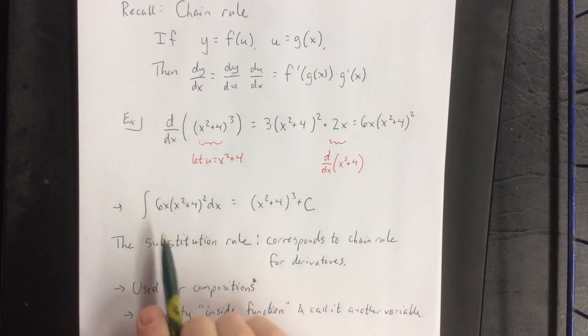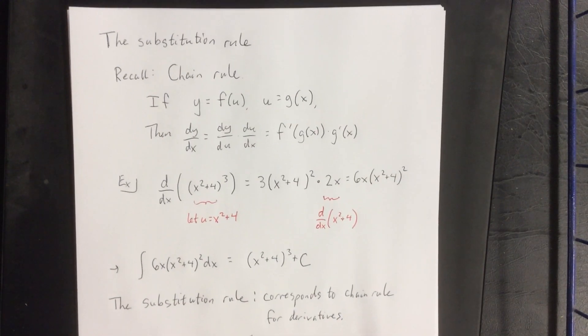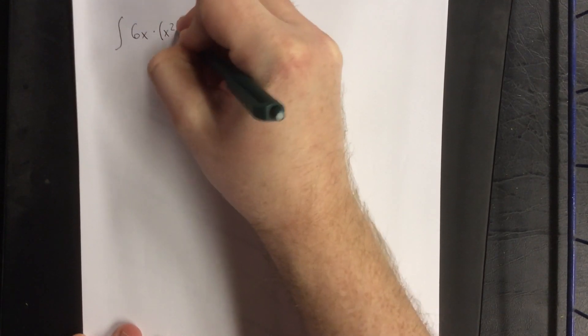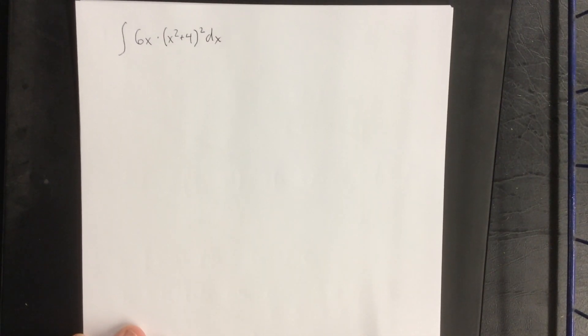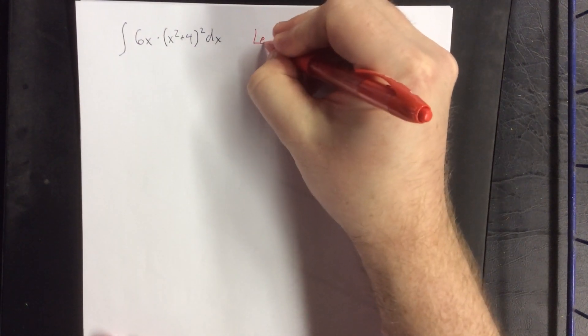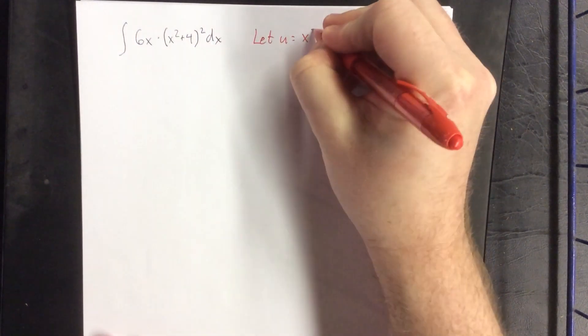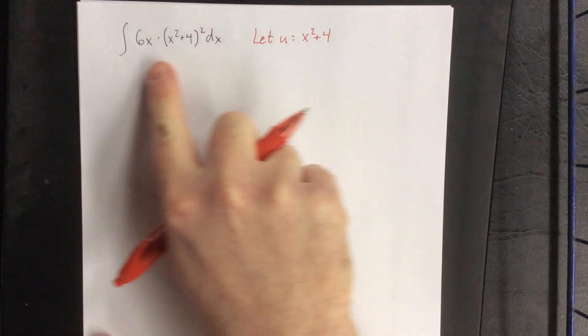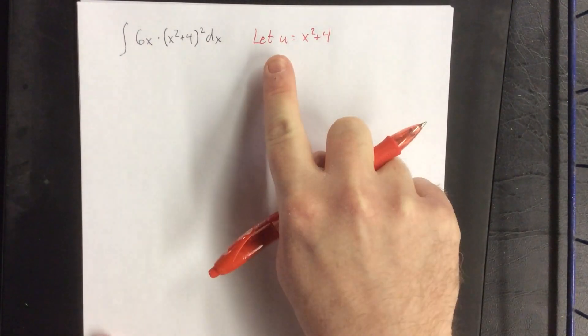The most common variable used in this situation is u. I'm going to demonstrate this technique by setting up the integral we had just a moment ago: the integral of 6x times x squared plus 4, quantity squared, dx. The first goal is identification that the substitution rule is the way to go — the indicator being that you have something that is the inside to another function, a composition of functions. Let u be equal to that inside function, x squared plus 4.